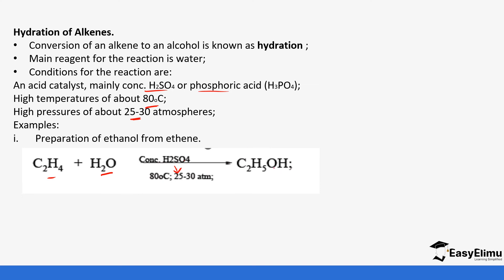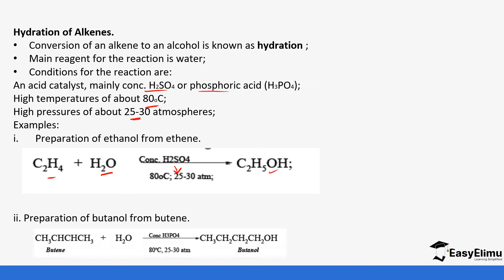For example, to prepare ethanol from ethene, we react ethene with steam in the presence of concentrated sulfuric acid under those conditions to get ethanol. For the preparation of butanol, we use butene with phosphoric acid as an alternative acid catalyst.